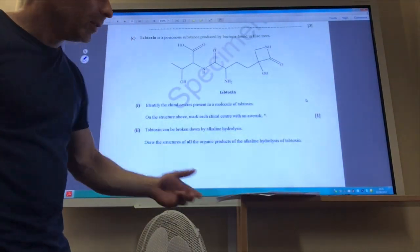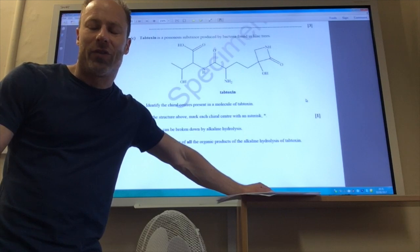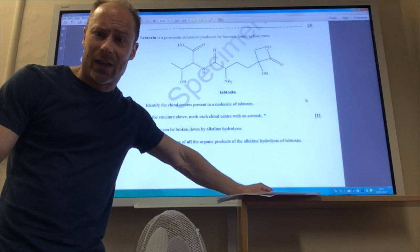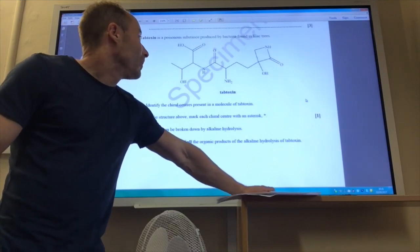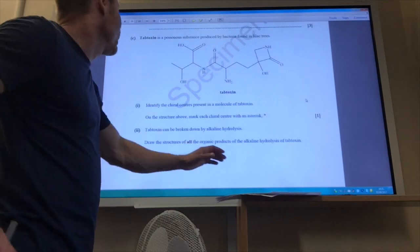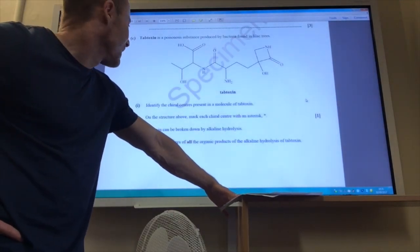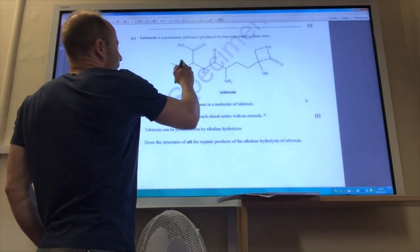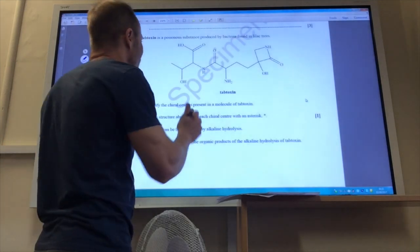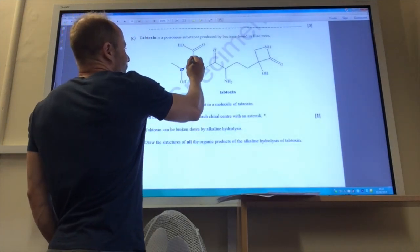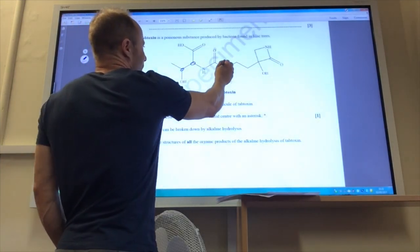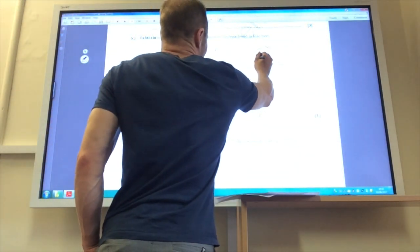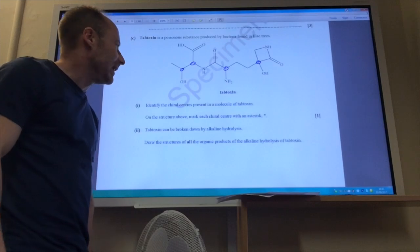This looks like the molecule from hell and would probably terrify you if you see this appearing on a paper. The main thing is, don't panic, just identify your main groups and take it from there. This is tabloxin, which is produced in lilac trees. Identify the chiral centers. That's not too bad. Our chiral centers, we're looking for a carbon with four different groups attached. That one there, we're going to have one there as well, and we're going to have one there as well. And finally, we've got one there. So we've got four chiral centers in that molecule.